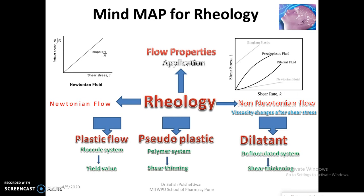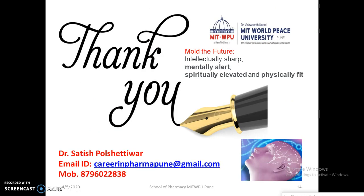To summarize: rheology is the study of flow properties and deformation of solids. It is broadly classified into Newtonian and non-Newtonian flow. Non-Newtonian flow is classified into plastic flow (flocculated systems with yield value), pseudoplastic flow (shear thinning, mainly polymers), and dilatant flow (shear thickening, deflocculated systems with more than 50% dispersed particles). Thank you very much for watching. Please keep watching and subscribe to my video channel.